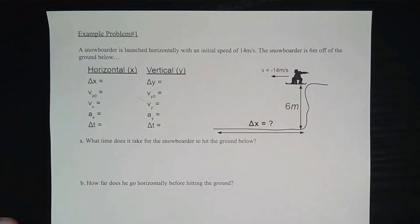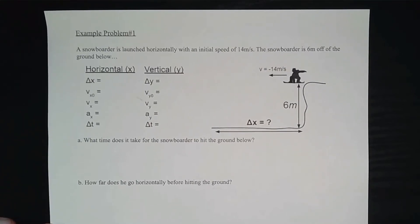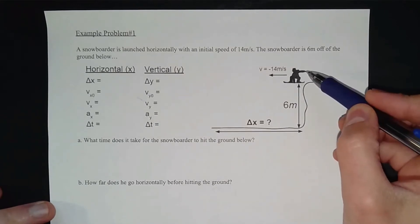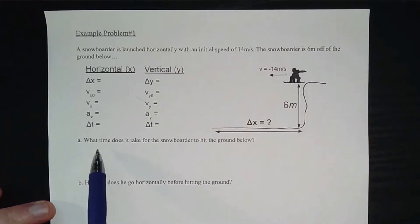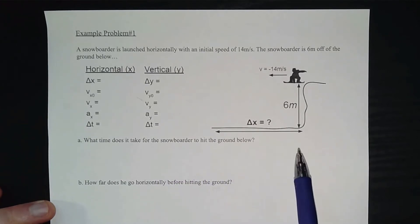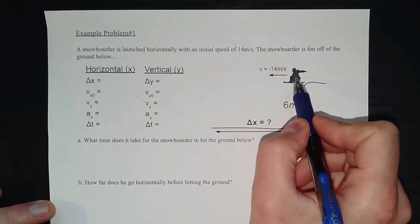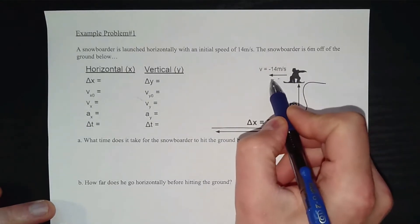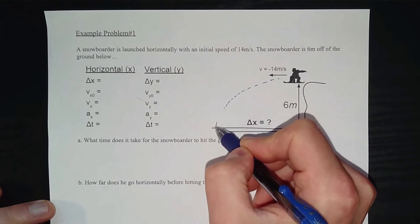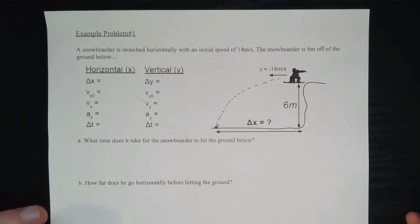A snowboarder is launched horizontally with an initial speed of 14 meters per second. The snowboarder is six meters off of the ground below. Part A asks what time does it take for the snowboarder to hit the ground, and Part B asks how far does the snowboarder go horizontally before hitting the ground. Once the snowboarder leaves the cliff they're going to follow a parabolic path.